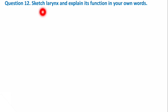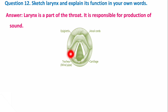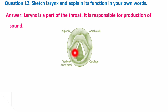Next question: Sketch the larynx and explain its function. The larynx is a part of the throat responsible for production of sound. It is the upper portion of the wind pipe — also called the voice box — made of cartilage, containing two vocal cords. The outer upper portion is known as the epiglottis.